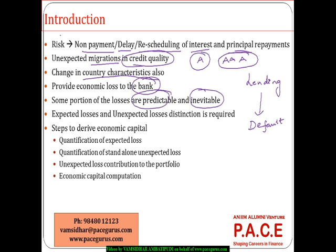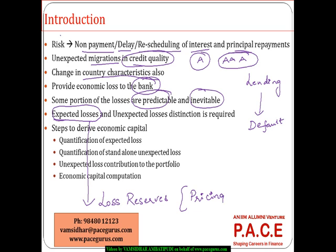By observing historical data and patterns, banks should be able to predict these losses quite comfortably. Those losses which banks can predict and estimate based on historical data are classified as expected losses. The bank can set aside a loss reserve or do the pricing of the loan accordingly. If a particular loan is perceived as riskier than average, the interest rate for that borrower could be increased, and it is quite possible that a few of those risky borrowers may default.